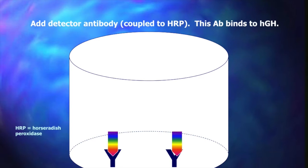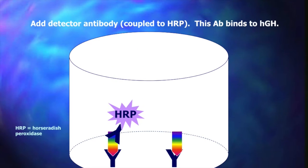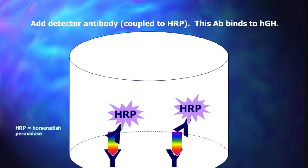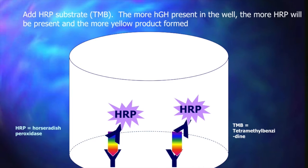Then wash. Afterwards, add the antibody that is coupled with horseradish peroxidase, which helps amplify weak signals. Add the HRP substrate, tetramethylbenzadine, which causes a yellow product to be made. The more yellow product, the more HRP and protein present.